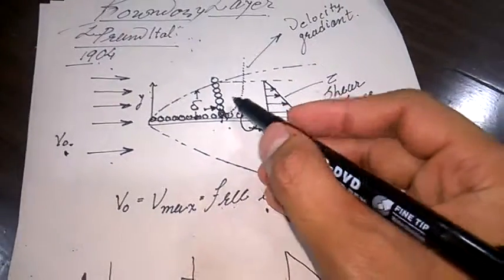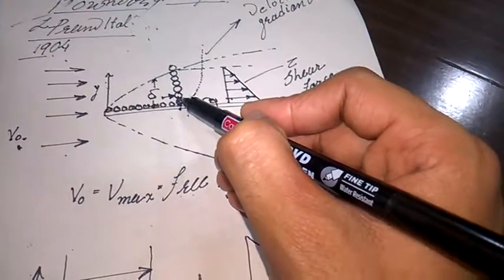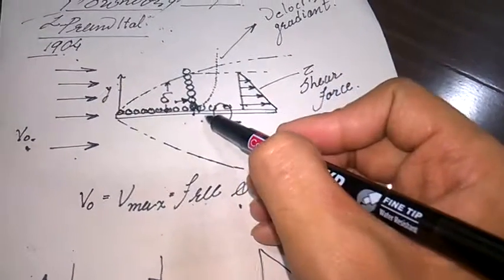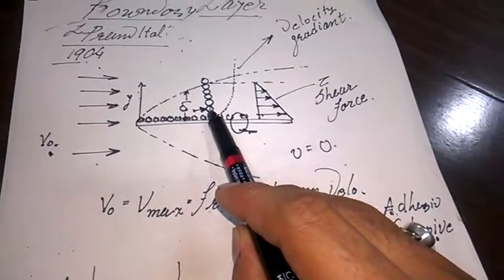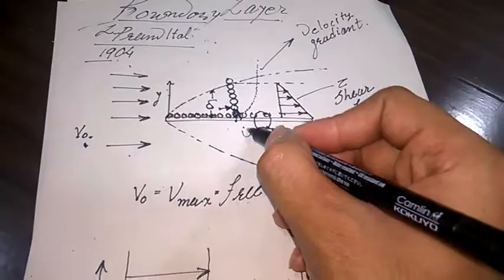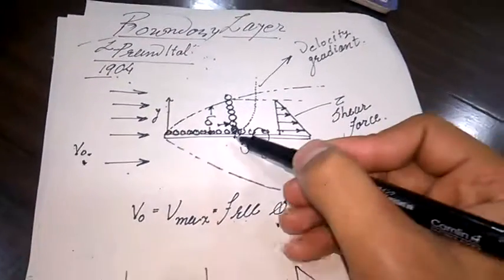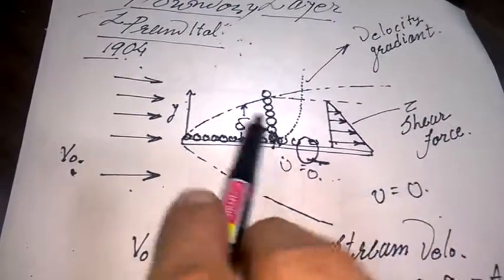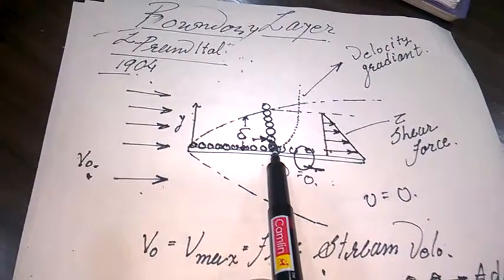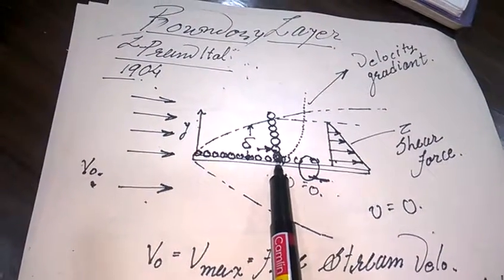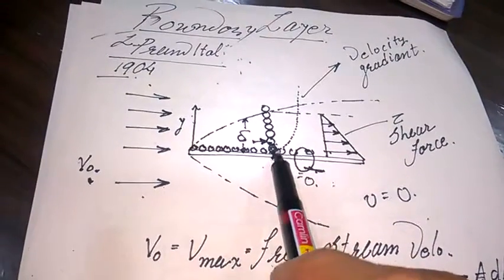The fluid is flowing with velocity V, but at the surface point the adjacent particle feels the cohesive force. Here v = 0 and further up v = V_max. Due to the inertia effect, the particles interact with each other, reducing the magnitude of velocity — for example, going from zero to one, two, three meters per second gradually up to the free-stream velocity.